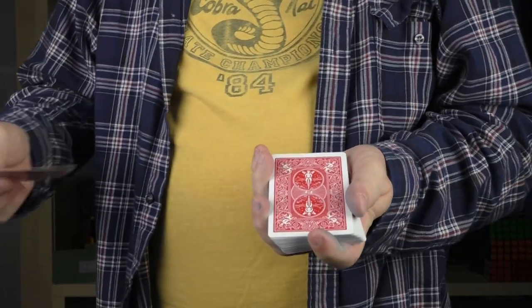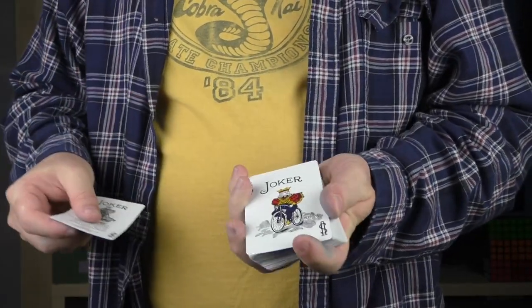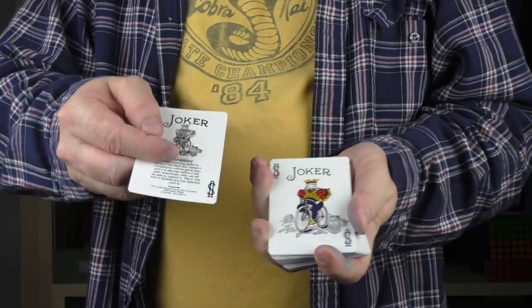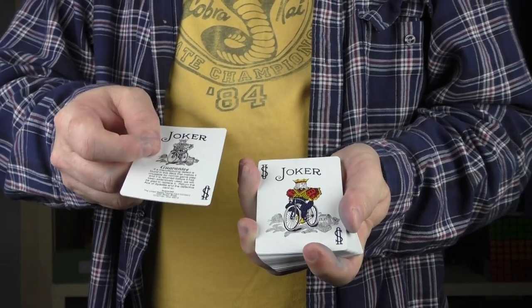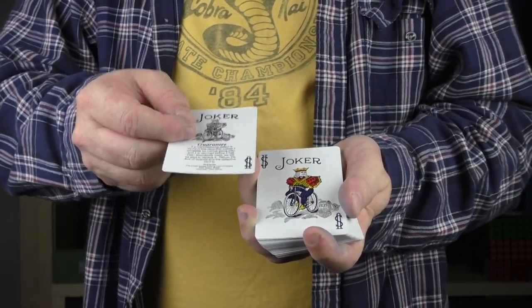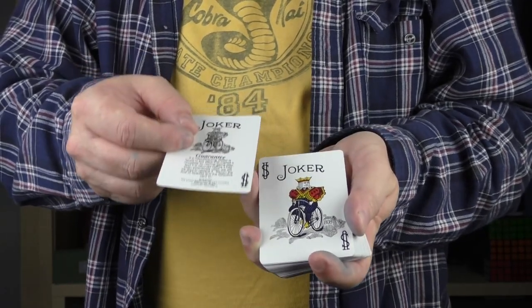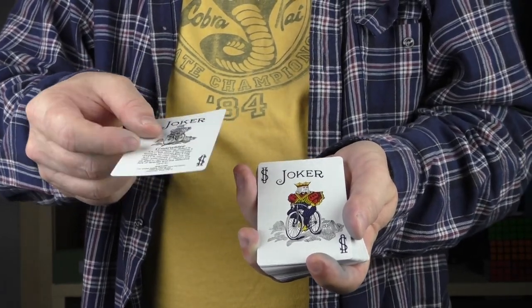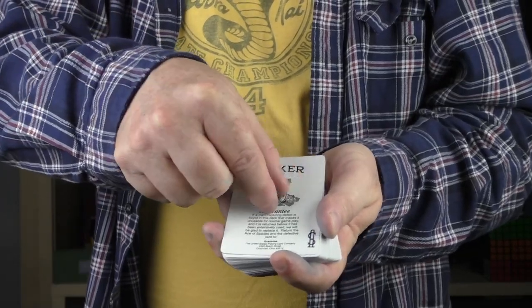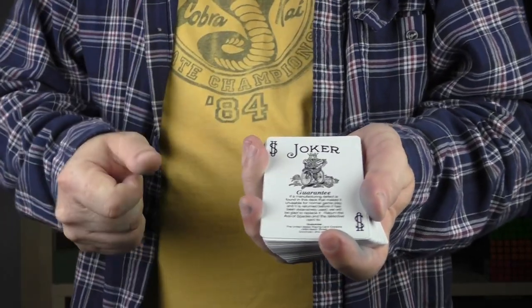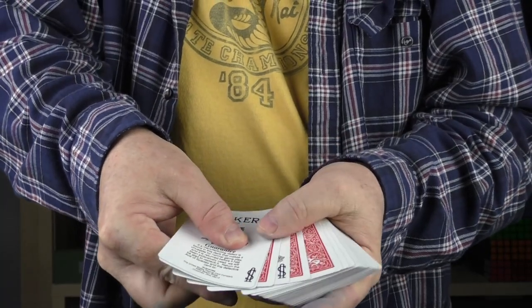Now, remember those jokers? What I'm going to do is I'm going to set one joker right on top. And then what's going to happen is I'm going to set this other joker on top and instantaneously your card is going to appear sandwiched between these two jokers. So I'm just going to set this right here, snap my fingers, and then lo and behold...